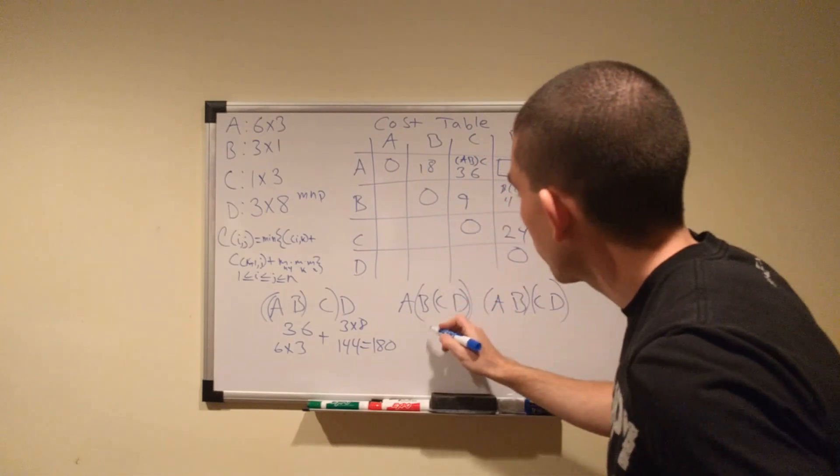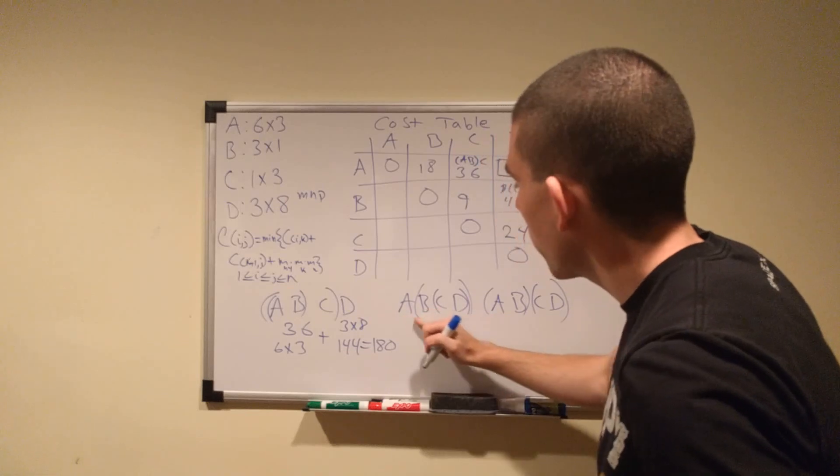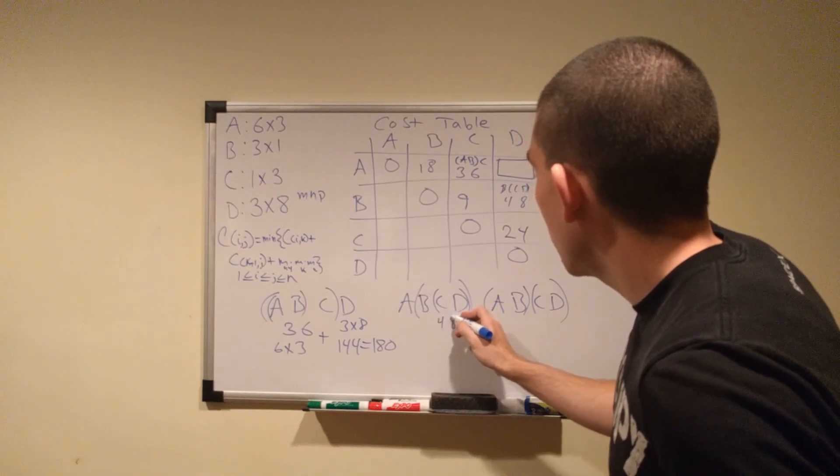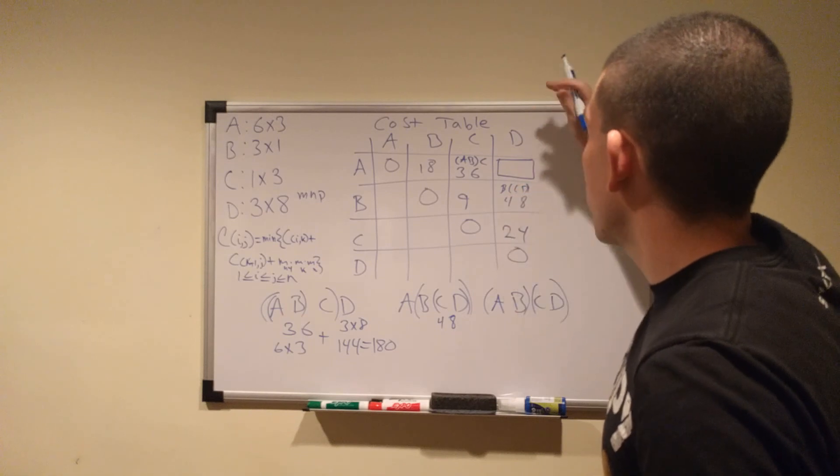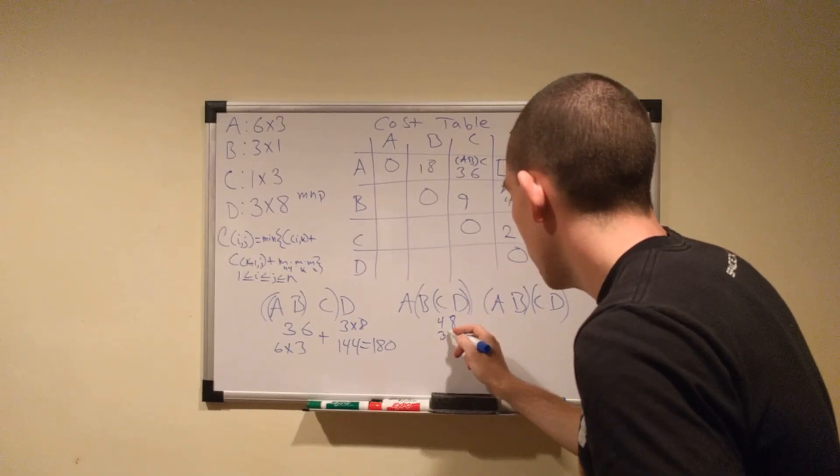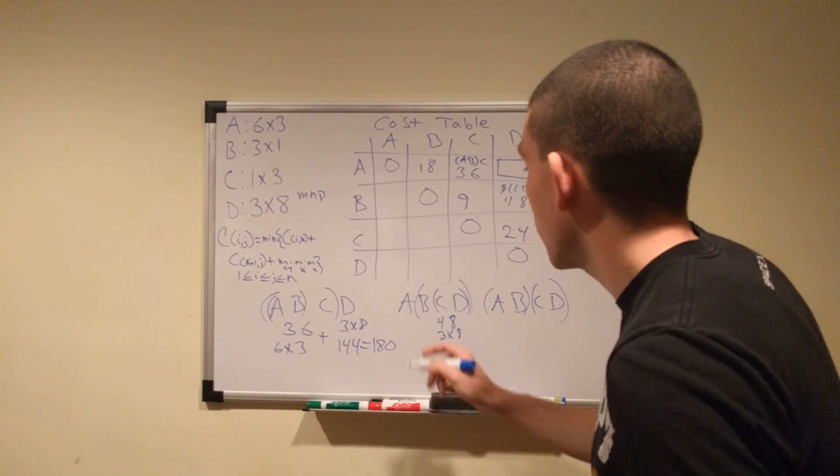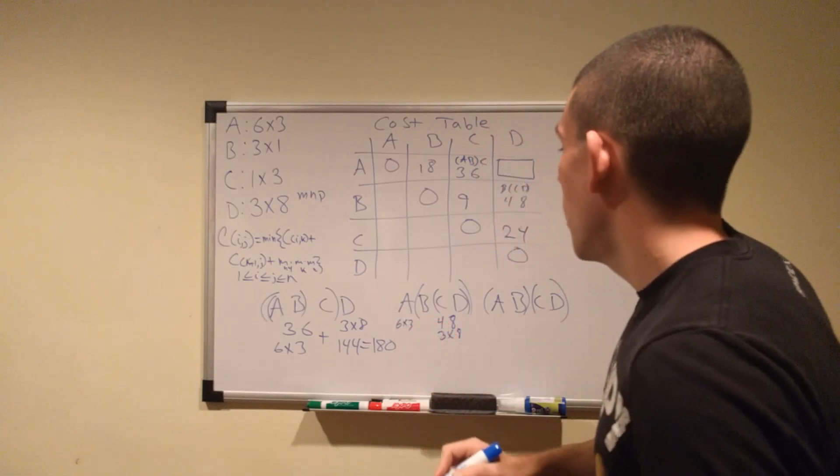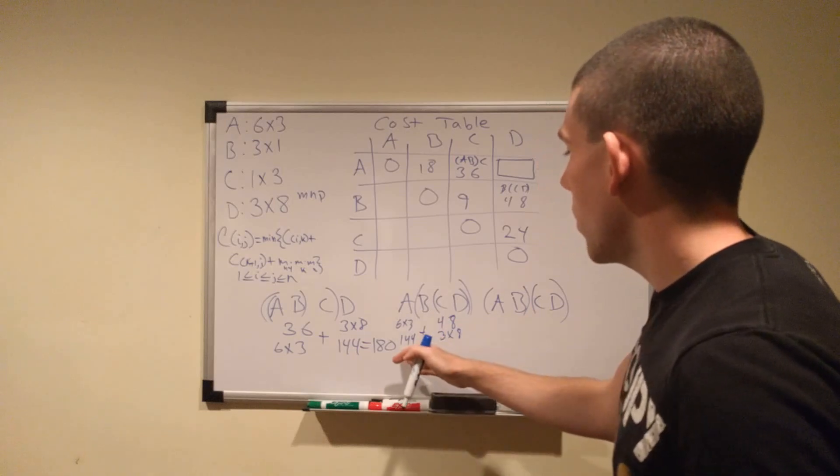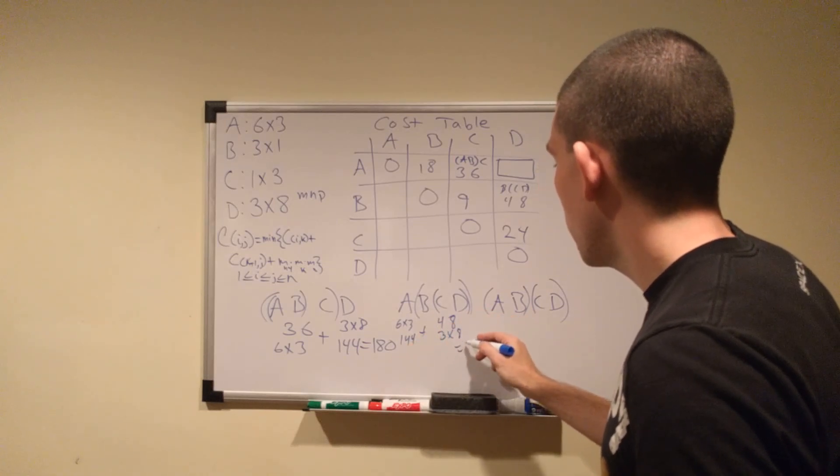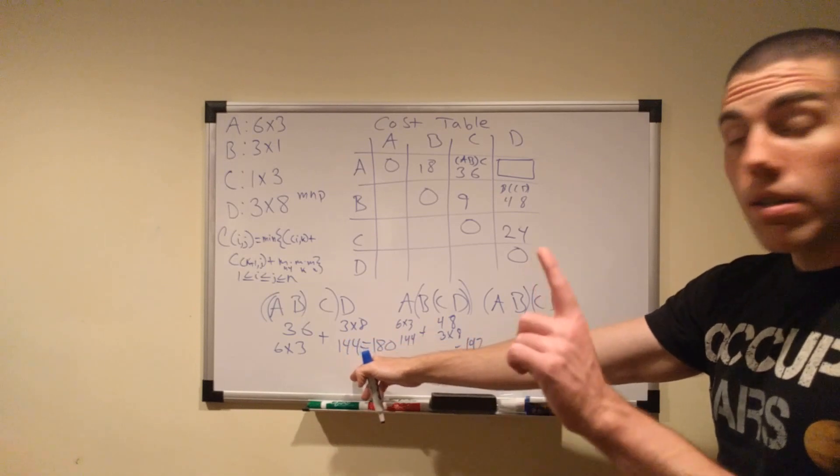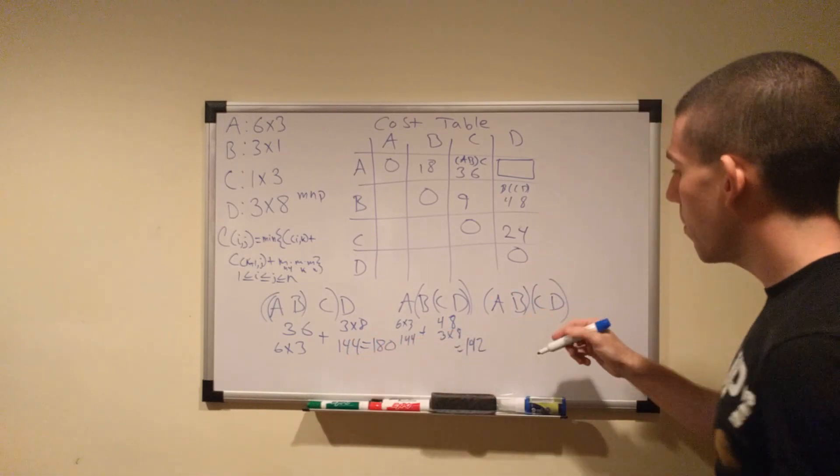And over here, B times C times D, we know that's 48 just by looking at our lookup table. Remember, the algorithm is not computing anything at this point. We already have all these things written down. 48. C times D, what does it give you? A 1 by 8 by B gives you a 3 by 8. And A is a 6 by 3. So this is going to be 144 again because 6 times 3 times 8. 192. Okay, so clearly this one's not going to win, but this one is still in the running.